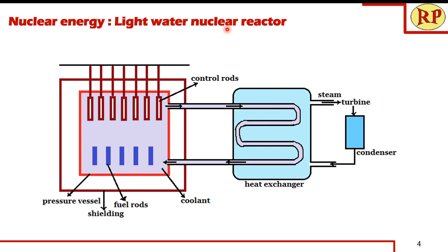In the light water nuclear reactor, light water (H₂O) itself acts as a moderator. The function of the moderator is to reduce the speed of the neutron — the moderator collides with the fast-moving neutron and reduces its speed, converting it to a slow-moving neutron. Only this slow-moving neutron then bombards with the uranium-235 nucleus.